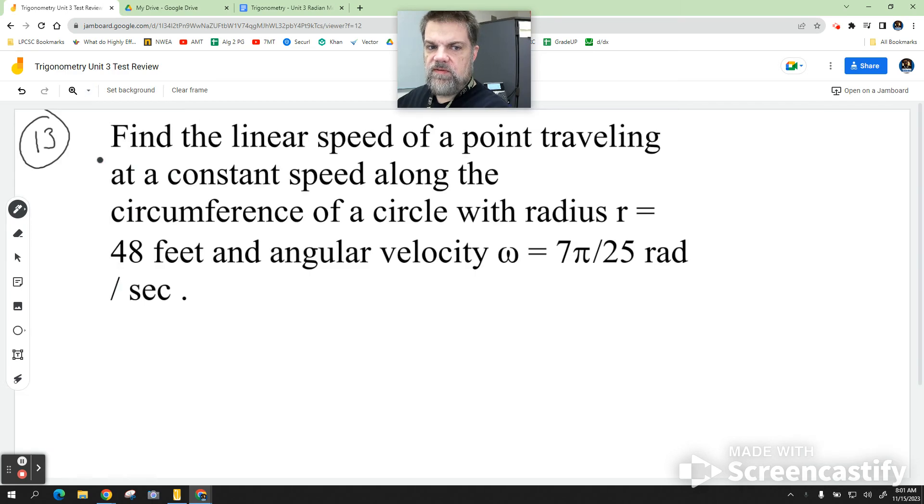So, one of the things that I've noticed, well, let's just do the problem and then I'll talk about it. It says, find the linear speed of a point traveling at a constant speed along the circumference of a circle with a radius of 48 feet.